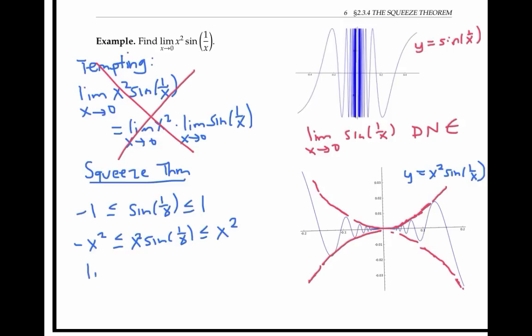And if we notice that the limit as x goes to zero of x squared is zero, and the limit as x goes to zero of negative x squared is also zero, we can conclude by the squeeze theorem, that the limit as x goes to zero of x squared sine of one over x is also zero, because it's squeezed in between these two functions with the same limit.